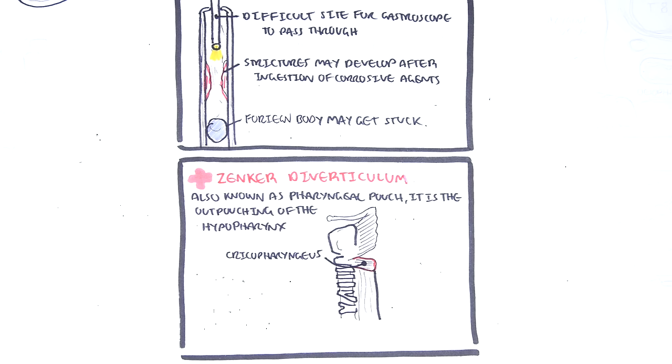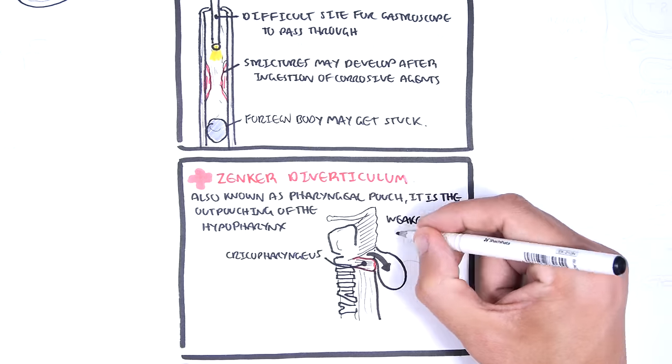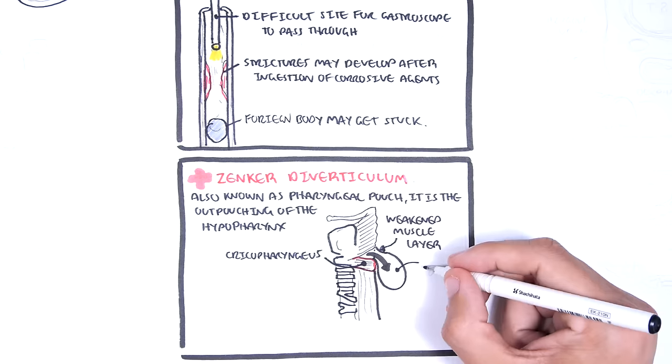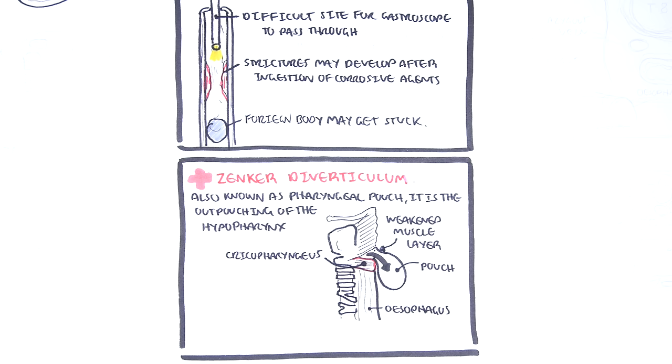The cricopharyngeus is the upper esophageal sphincter. If there is a weakened layer around the pharyngoesophageal junction, the mucosa and submucosa layers originating here can pop out, resulting in an outpouching sac.